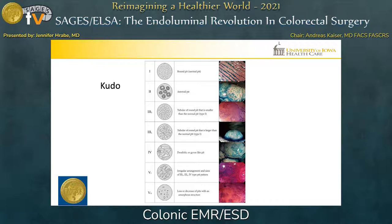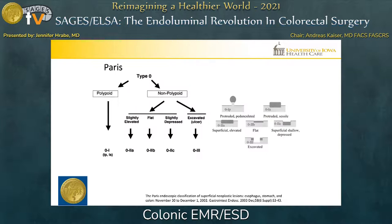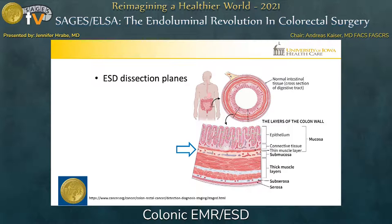Commonly used polyp classification schemes include the KUDO-PIT pattern, the NBI International Colorectal Endoscopic Classification, and the PARIS classification. Assessing the neoplasia with one of these systems is important for appropriate patient selection. Understanding the plane to be dissecting in is critical — for endoscopic submucosal dissection, this is in the submucosal plane, taking great care to stay above the muscular layer so as to reduce the risk of perforation.